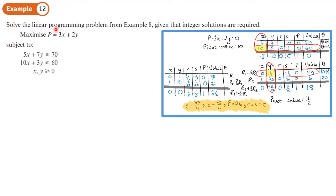Example 12: Solve the linear programming problem from Example 8, given that integer solutions are required. So this is all the working from Example 8. The solutions we got were y equals 80 over 11, which is equal to 7 and 3 elevenths, and for our value of x, that was 42 over 11, which is the same as 3 and 9 elevenths.